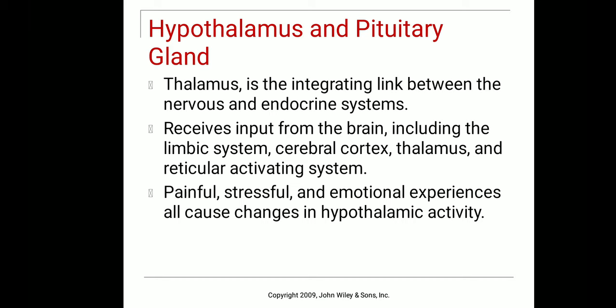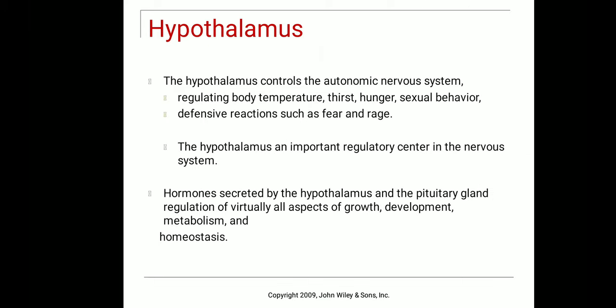Coming to the glands — the hypothalamus and pituitary gland. The thalamus is the integrating part between the nervous system and the endocrine system. The thalamus helps with painful, stressful, and emotional experiences and relays all these activities to the hypothalamus, which then sends impulses or information to the endocrine system.